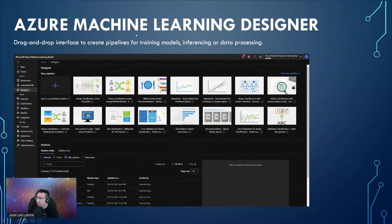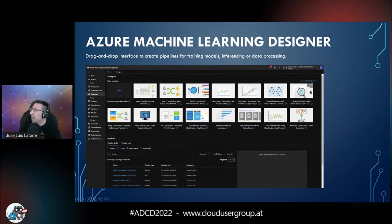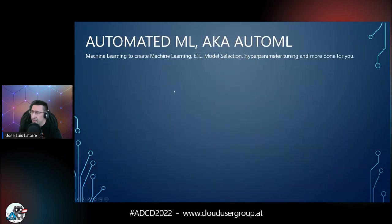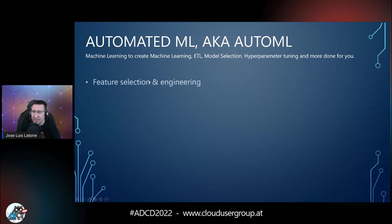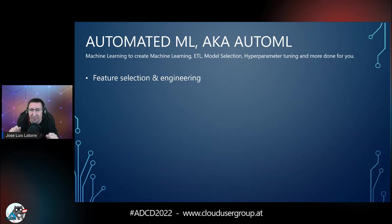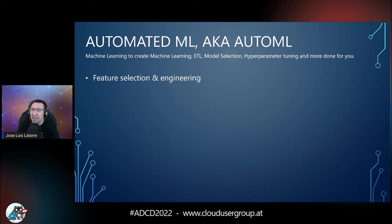So we are done with the Machine Learning Designer — now you know how to create a machine learning model with it. We are going to take a look at what is Automated Machine Learning. This is pretty cool — for me, this is my favorite feature. Essentially it's using machine learning to do machine learning. It does a lot of what we just did with drag and drop, but it does it a lot better than I did a moment ago.